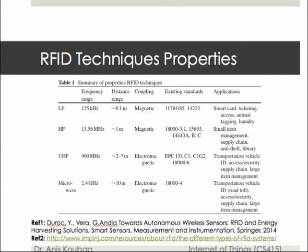Ultra high frequency (UHF) RFID covers the range from 300 MHz, with typical systems operating at 900 MHz. Microwave RFID operates at 2.4 GHz and can tolerate ranges up to 10 meters, while the range of passive UHF systems can be as long as 12 meters. UHF RFID has faster data transfer rates than LF and HF systems but is most sensitive to interference. Many UHF manufacturers have found ways to design tags, antennas, and readers to maintain high performance even in difficult environments. Applications include retail inventory management, pharmaceutical anti-counterfeiting, and wireless device configuration.